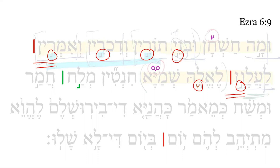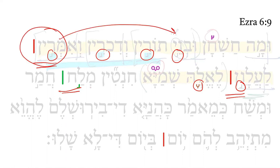Continuing on, the second proof that the vertical strokes are Paseks is that the Munach LeGarmeh itself can have a maximum of two conjunctives before it. So this one has none before it, but the first one in this analysis has three conjunctive accents before it. So that cannot be a Munach LeGarmeh either.